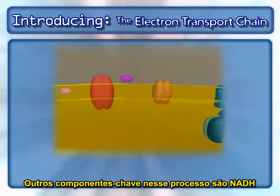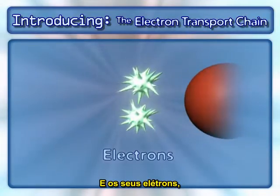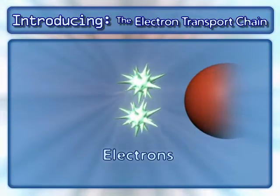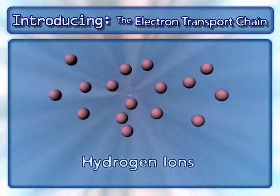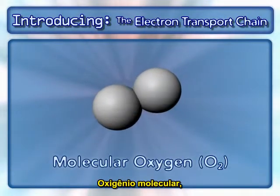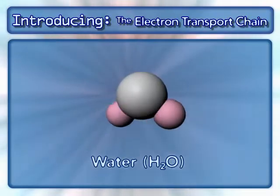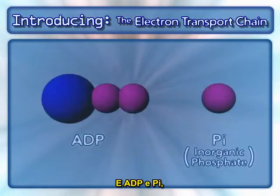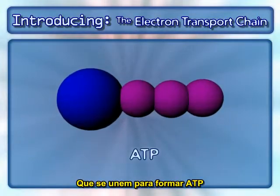Other key components in this process are NADH and the electrons from it, hydrogen ions, molecular oxygen, water, and ADP and inorganic phosphate, which combine to form ATP.